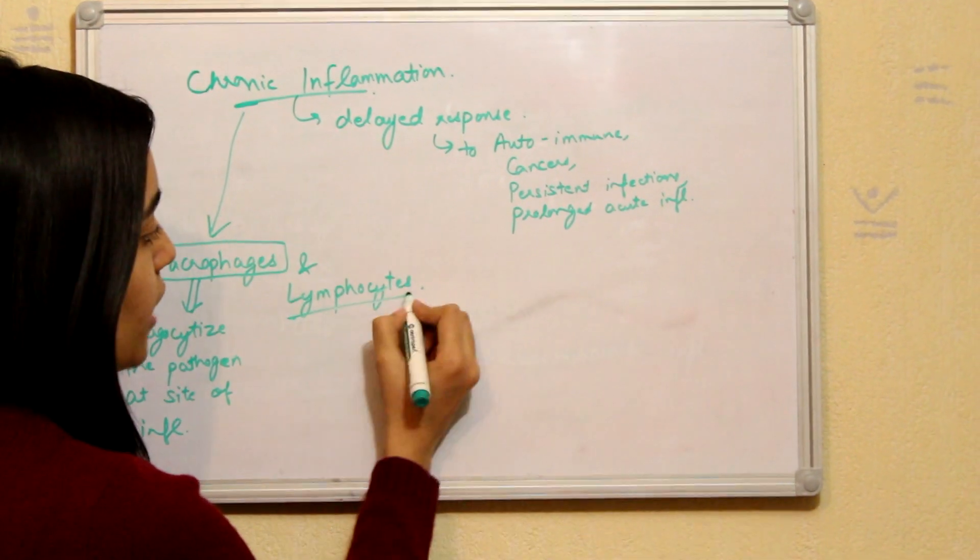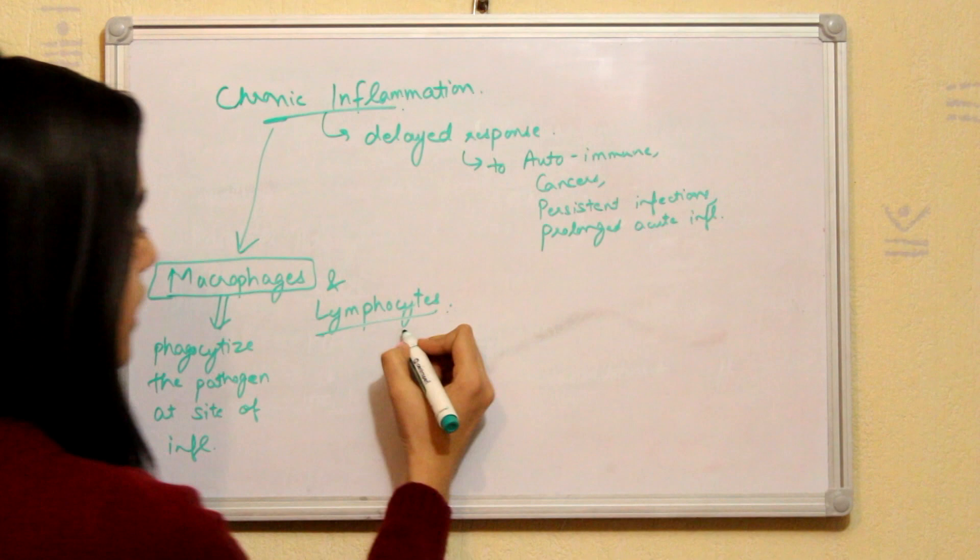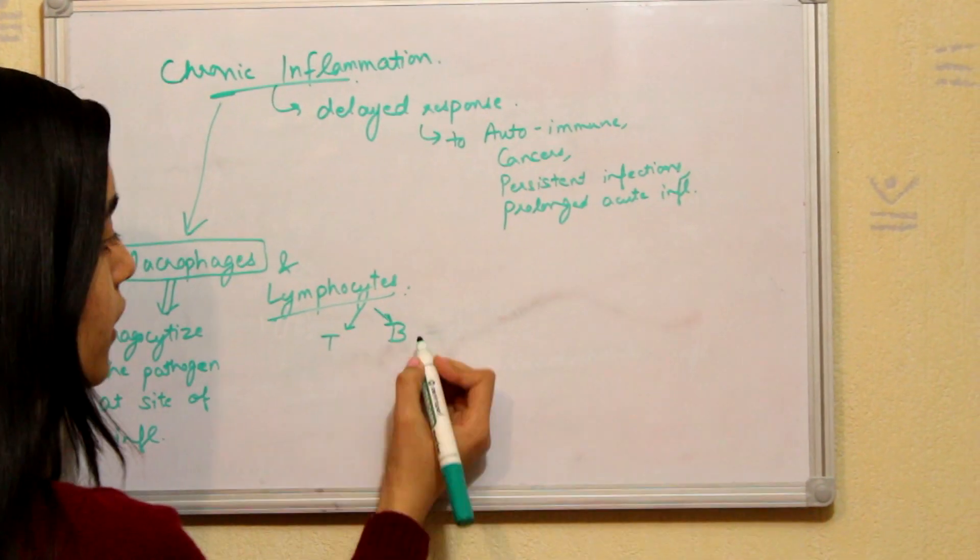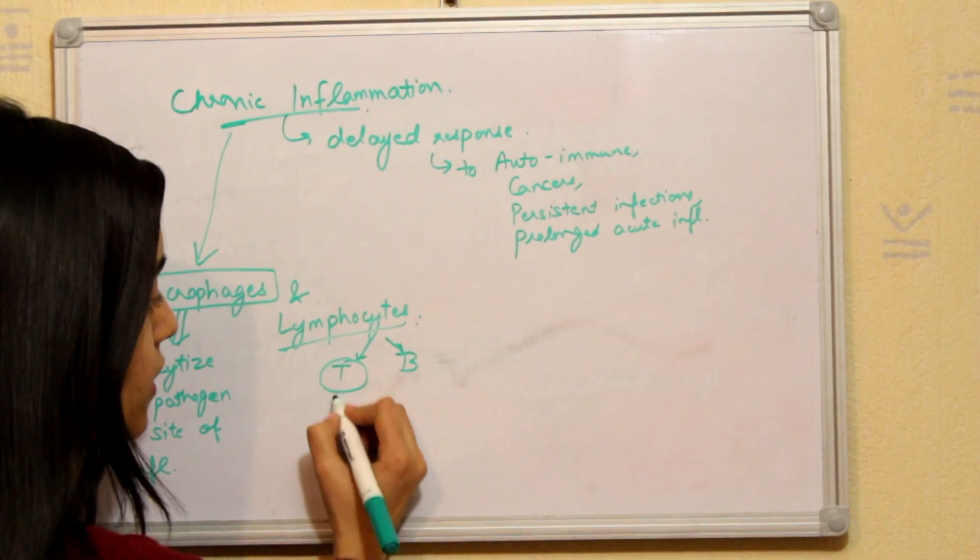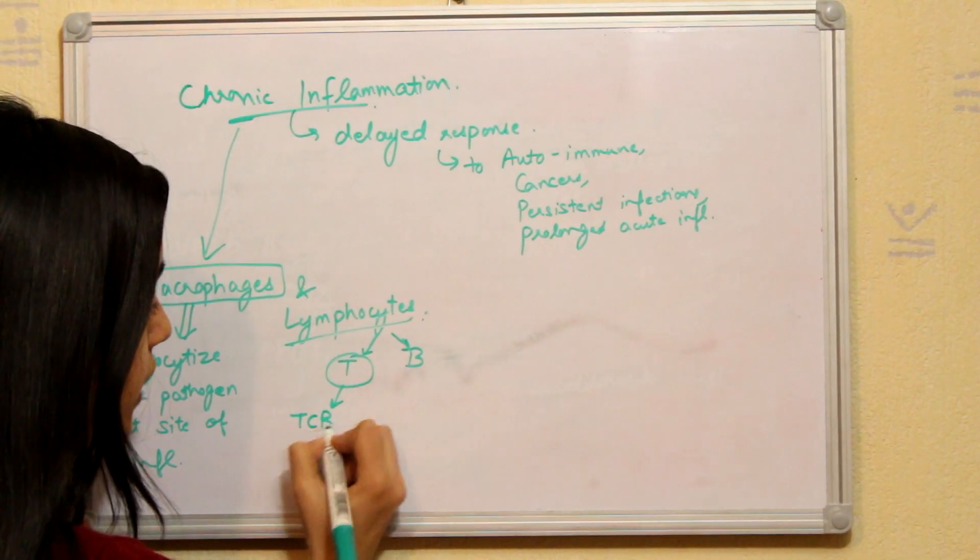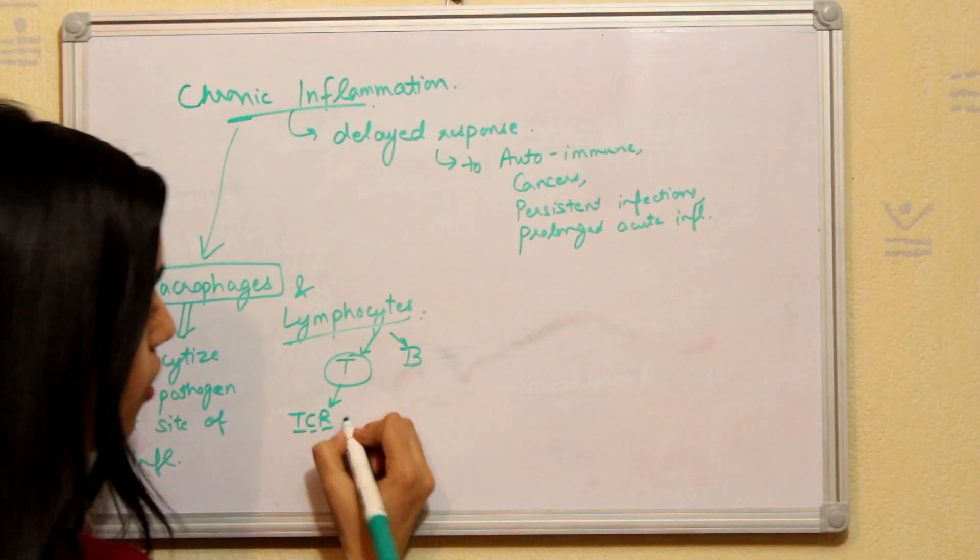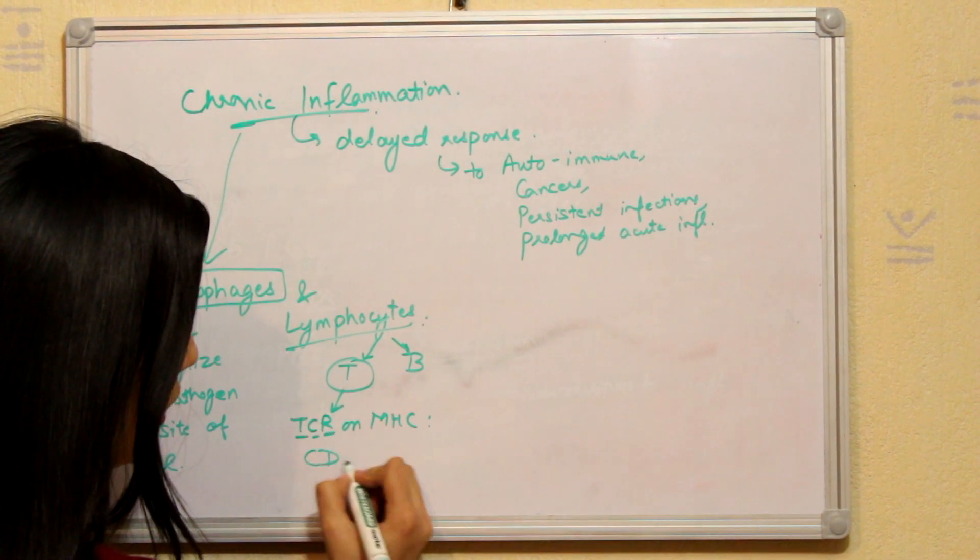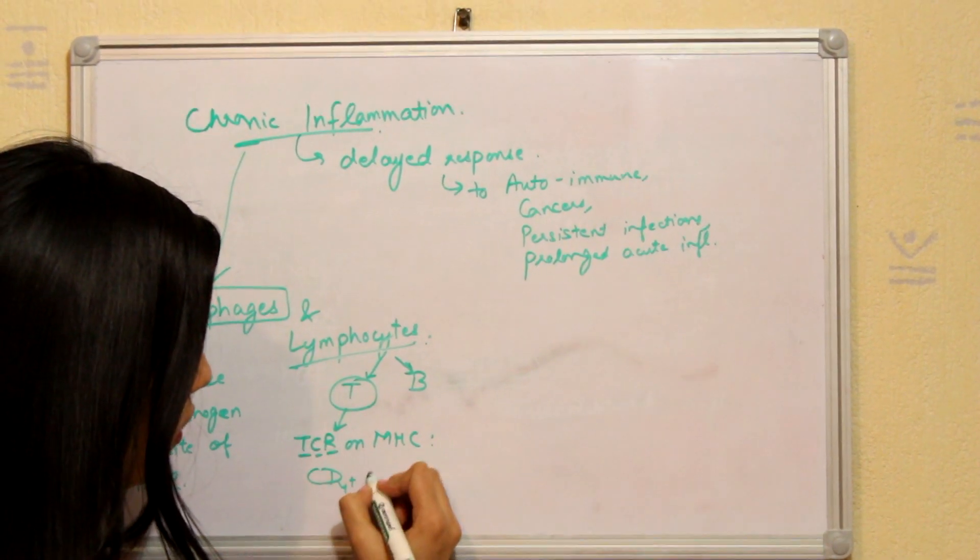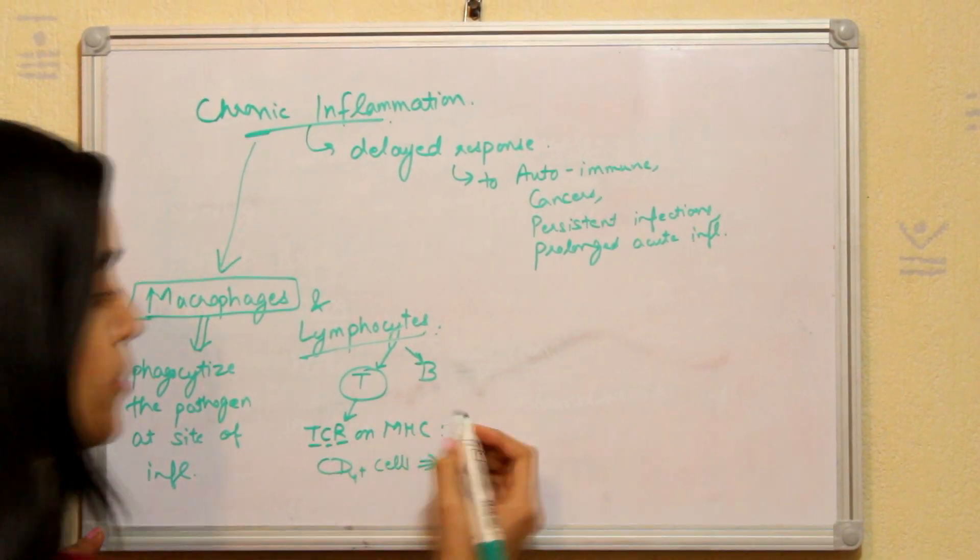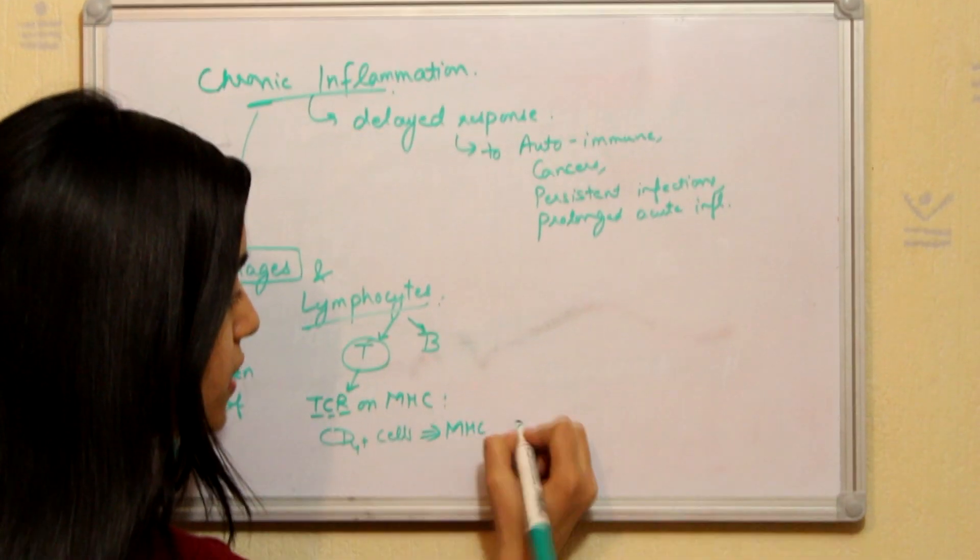And lymphocytes can be of two types, T and B lymphocytes. A very important thing here is that the T cells use TCR, which are T cell receptors on MHC molecules. That is, CD4 plus cells use TCR, T cell receptors, on MHC molecules.